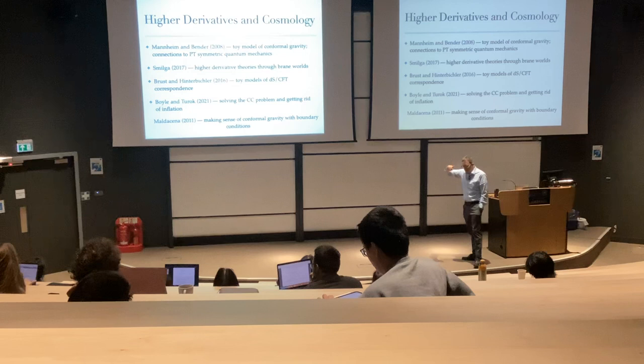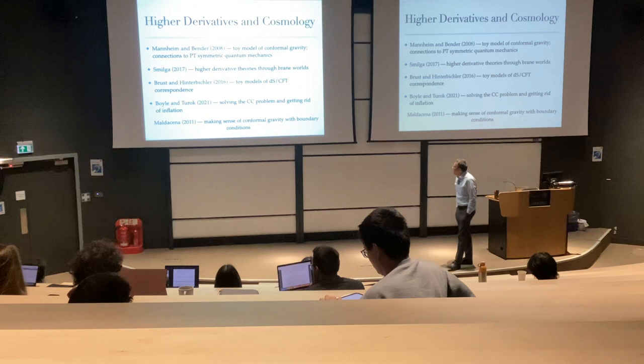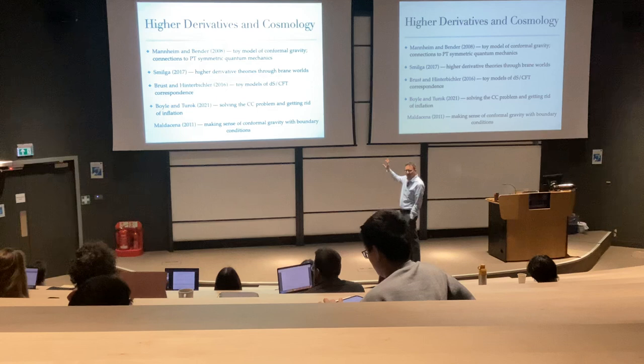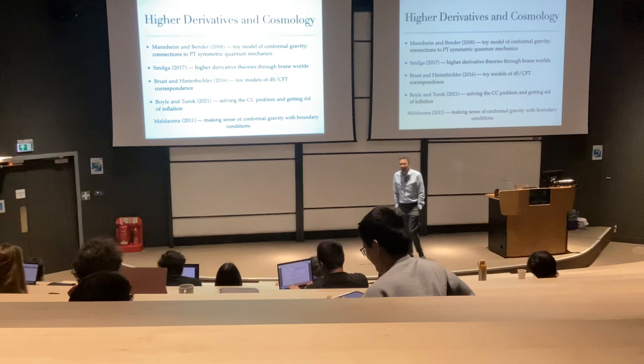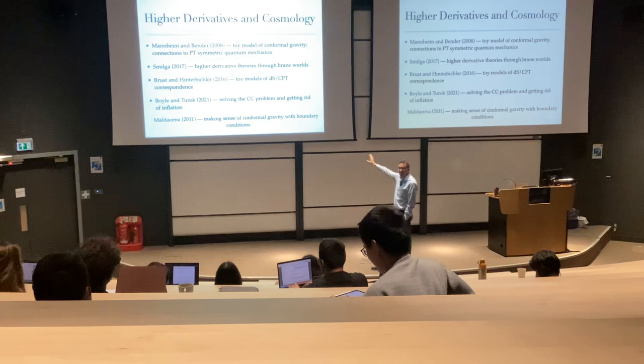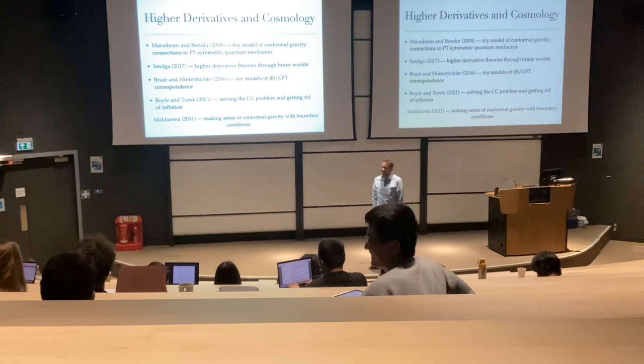After we wrote our paper, we found out through Babi Acharya that Boyle and Turok were also looking at this box-squared phi theory. They have this amusing numerological observation that if you add one of these box-squared phi theories to the standard model, it's a way of somehow solving the cosmological constant problem and getting rid of inflation — a model of the universe where you have the standard model plus box-squared phi, you don't need inflation, and your hard problems in cosmology are solved.